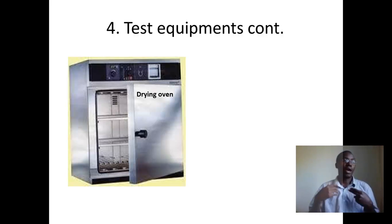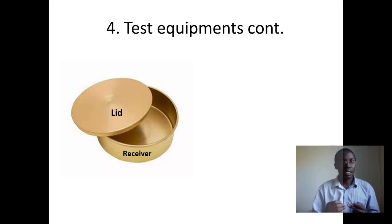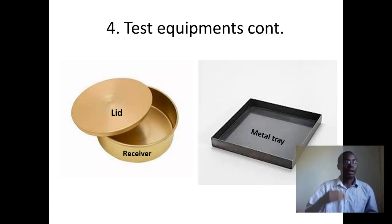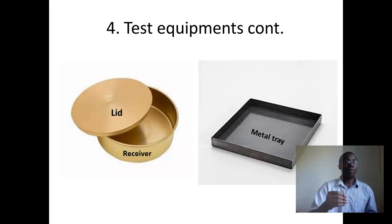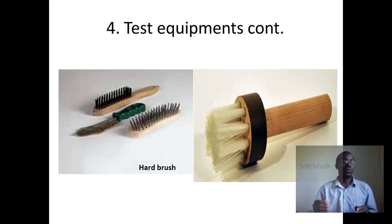The drying oven is used to extract water from the sand sample at a temperature of 105 degrees Celsius. The weighing scale or balance is used to get the exact weights of the sand particles. The lid covers the sieves such that sand particles are not lost during the sieving process. The receiver collects all sand particles that go through the sieves. The metal tray is where sand particles are placed while transferring them. The hard brush is used to clean sieves with holes larger than 1 mm, and the soft brush is used to clean sieves with holes smaller than 1 mm.